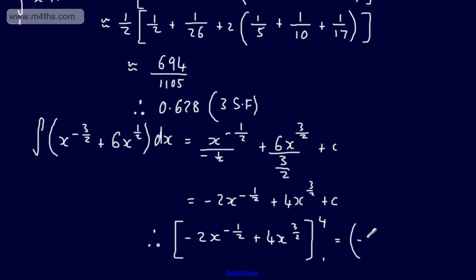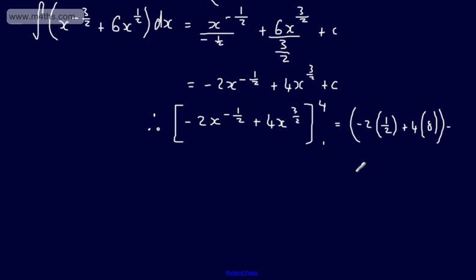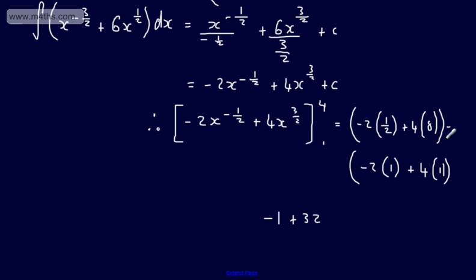At x = 4: minus 2 times 4 to the minus 1/2 — which is 1 over the square root of 4, giving 1/2 — plus 4 times 4 to the 3/2 — taking the square root (2) and cubing it (8) — gives minus 1 plus 32. At x = 1: minus 2 times 1 plus 4 times 1, giving 2. Subtracting: minus 1 plus 32 minus 2 gives a total of 29.